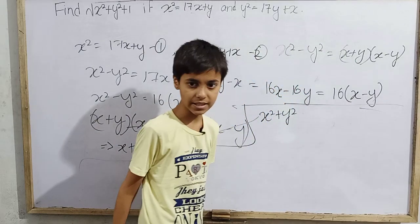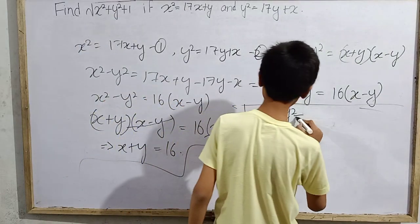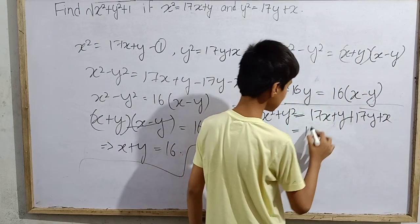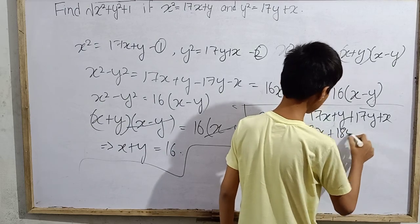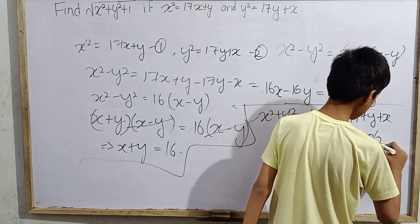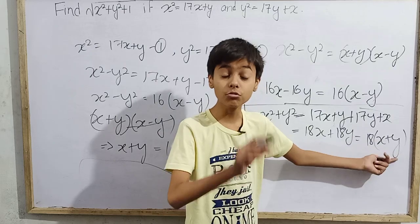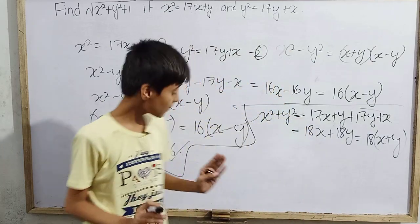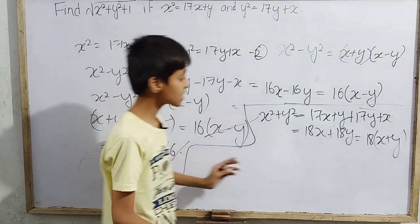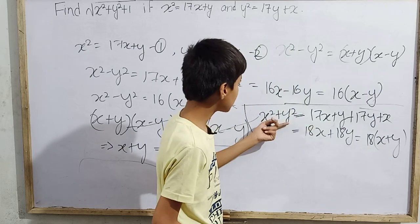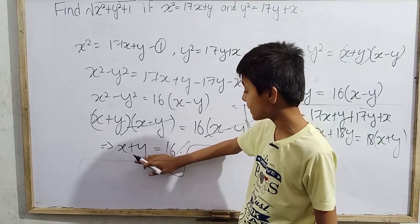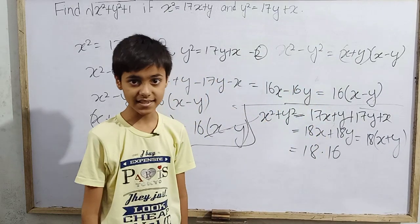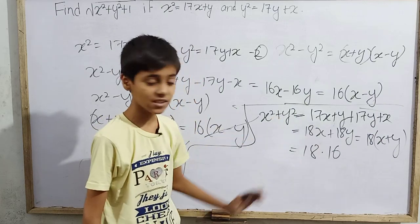Now I add equation 1 and equation 2: x² + y² = (17x + y) + (17y + x) = 18x + 18y = 18(x + y). Since we already found that x + y = 16, substituting gives x² + y² = 18 × 16.